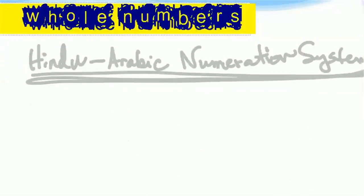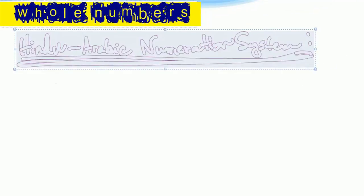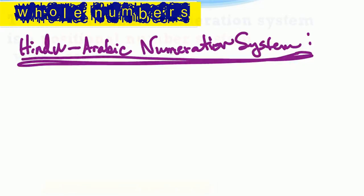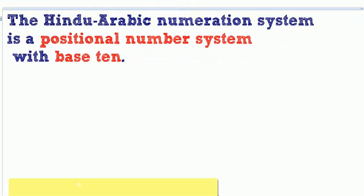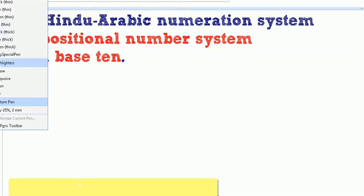Hello, everybody. Today we are going to talk about whole numbers. They are part of the Hindu-Arabic numeration system. The Hindu-Arabic numeration system is what's called a positional number system, and we say it's with base 10.